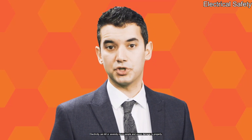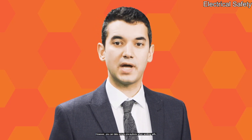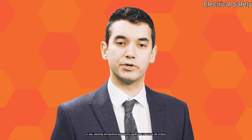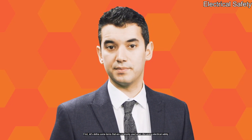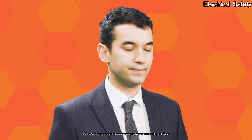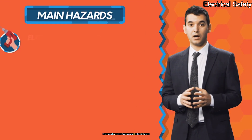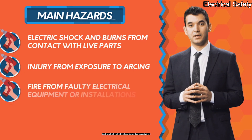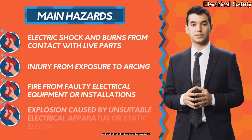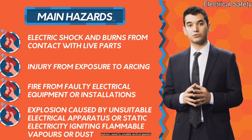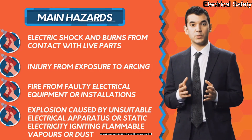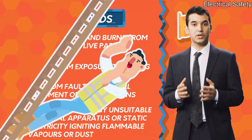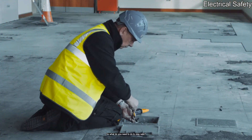Electricity can kill or severely injure people and cause damage to property. The main hazards of working with electricity are: electric shock and burns from contact with live parts; injury from exposure to arcing; fire from faulty electrical equipment or installations; explosion caused by unsuitable electrical apparatus or static electricity igniting flammable vapours or dust. Electric shocks can also lead to other types of injury, for example by causing a fall from ladders or scaffolds.